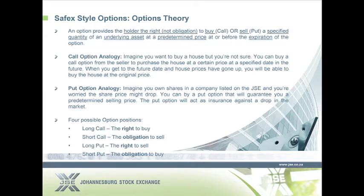Some analogies we use to explain call options and put options. For a call option, we use the analogy of a house. You are in the market to buy a new house. In your area, there's someone selling a house for a million Rand. You are very interested in buying this house, but due to unknown reasons — you're waiting for a bonus, or you're waiting for a home loan to approve — you don't have the million Rand yet. You can approach the seller and say: I would like to buy the option from you to buy this house in six months' time. The owner of the house will tell you: yes, Magnus, I'm happy you buy this house for a million Rand in six months' time. But in order to get this right, but not this obligation, you're going to need to pay me a premium.